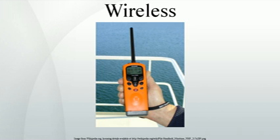Introduction. Wireless operations permit services, such as long-range communications, that are impossible or impractical to implement with the use of wires. The term is commonly used in the telecommunications industry to refer to telecommunications systems, e.g. radio transmitters and receivers, remote controls, which use some form of energy, e.g. radio waves, acoustic energy, to transfer information without the use of wires. Information is transferred in this manner over both short and long distances.